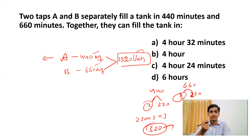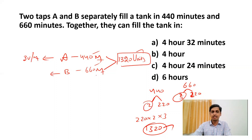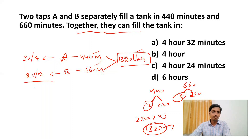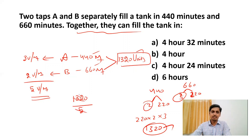Tap A fills 1320 units in 440 minutes, so in one minute tap A fills 1320/440 = 3 units per minute. Pipe B fills 1320 units in 660 minutes, so in one minute pipe B fills 1320/660 = 2 units per minute. Together they fill 3 + 2 = 5 units per minute. Total capacity is 1320 units, so time = 1320/5 = 264 minutes.